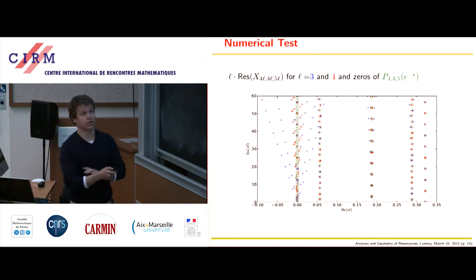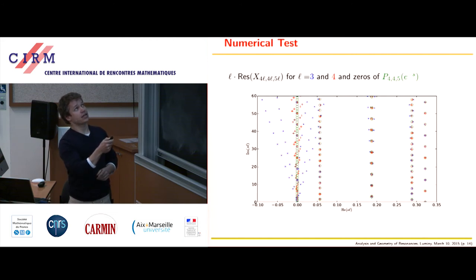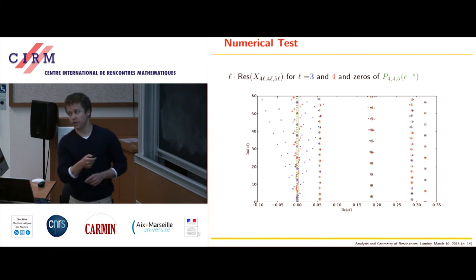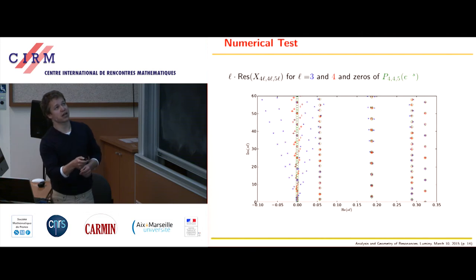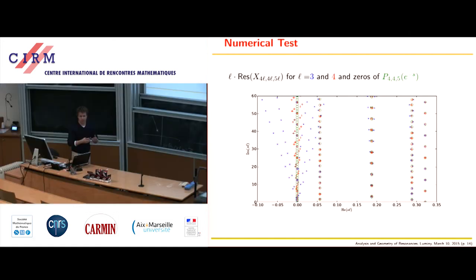Let us check this in the numerics. It's again the same plot with ratio 4, 4, 5. L equal to 3 and L equal to 4 are the blue and red crosses, and I added green circles for the zeros of the corresponding polynomial. There is perfect agreement even for L equal to 3 on the first chain. Here we see some deviations for L equal to 3, but L equal to 4 is still perfectly approximated by the polynomial zeros. It seems to work very well even for relatively low L values.